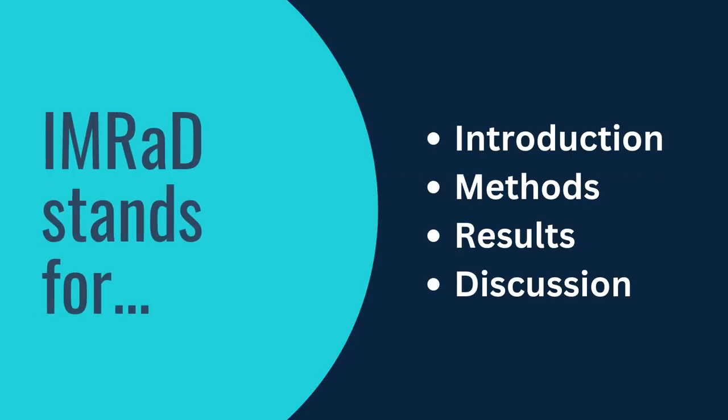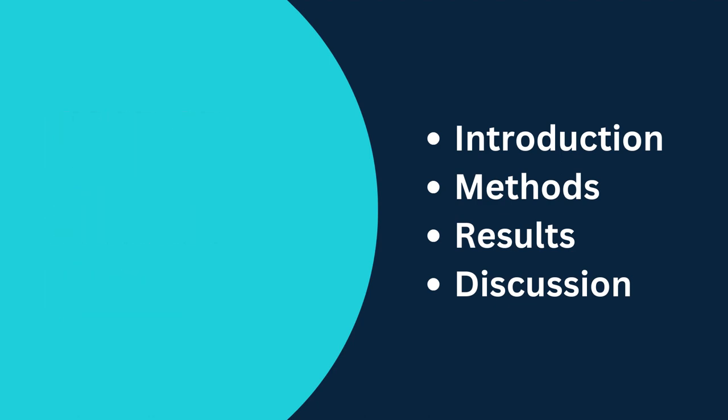IMRAD stands for Introduction, Methods, Results, and Discussion. These are the primary sections of an empirical research article. Sometimes these sections will be labeled differently, but the content will be similar.